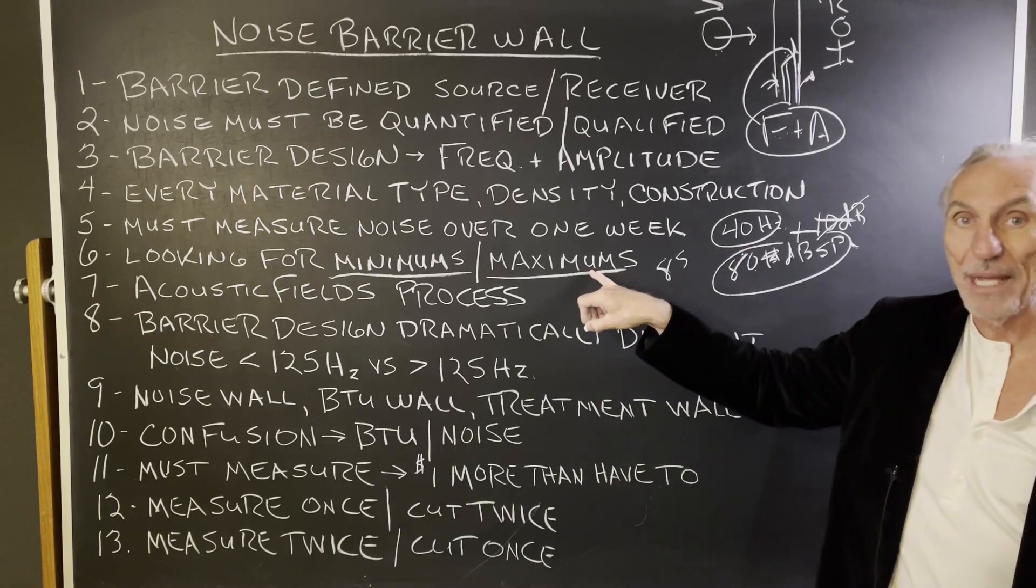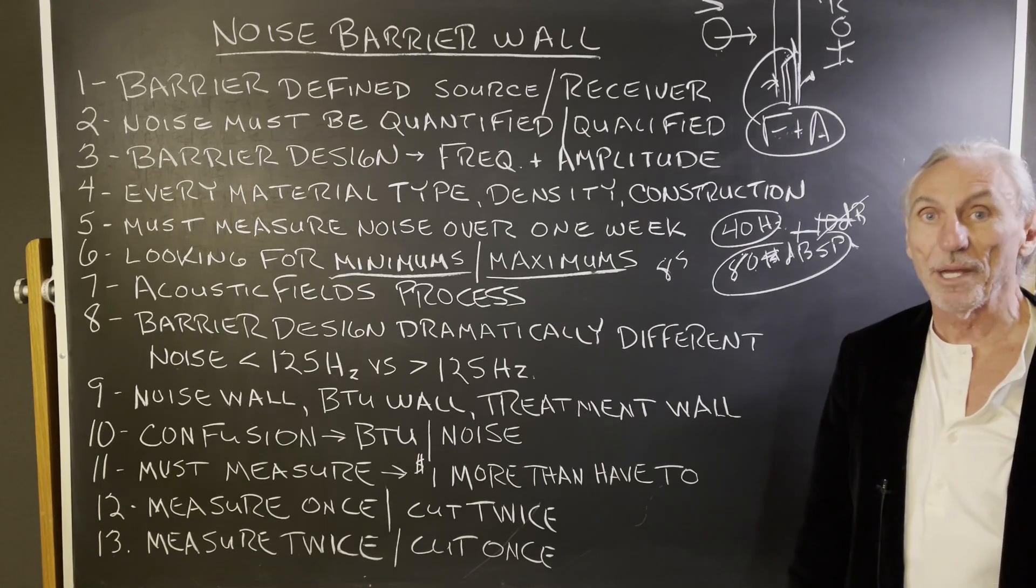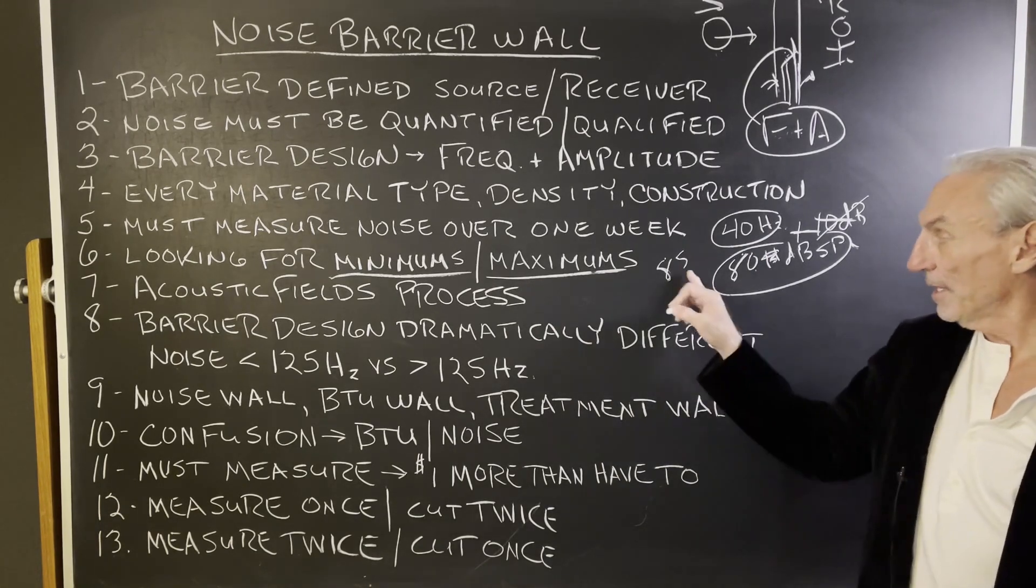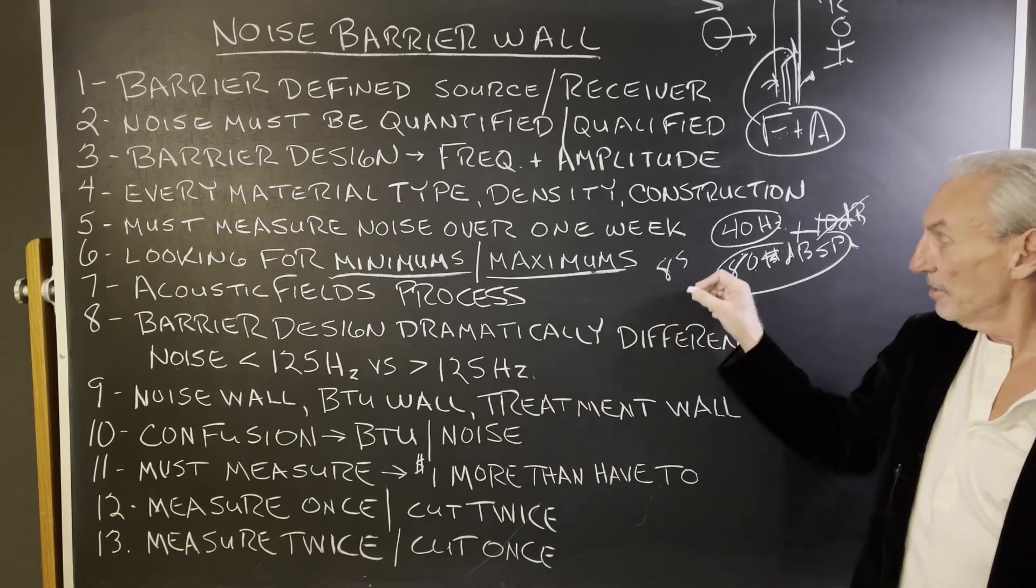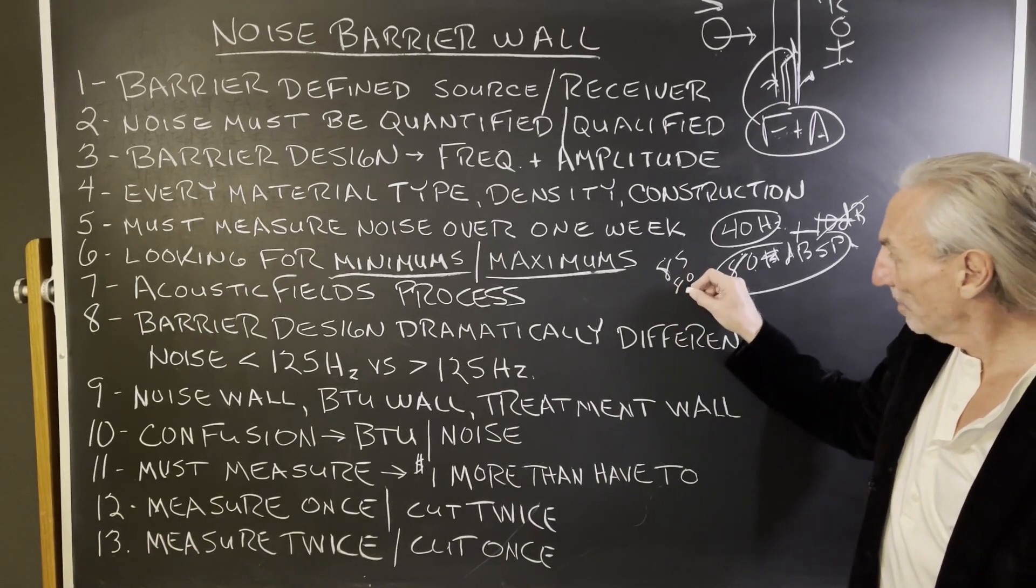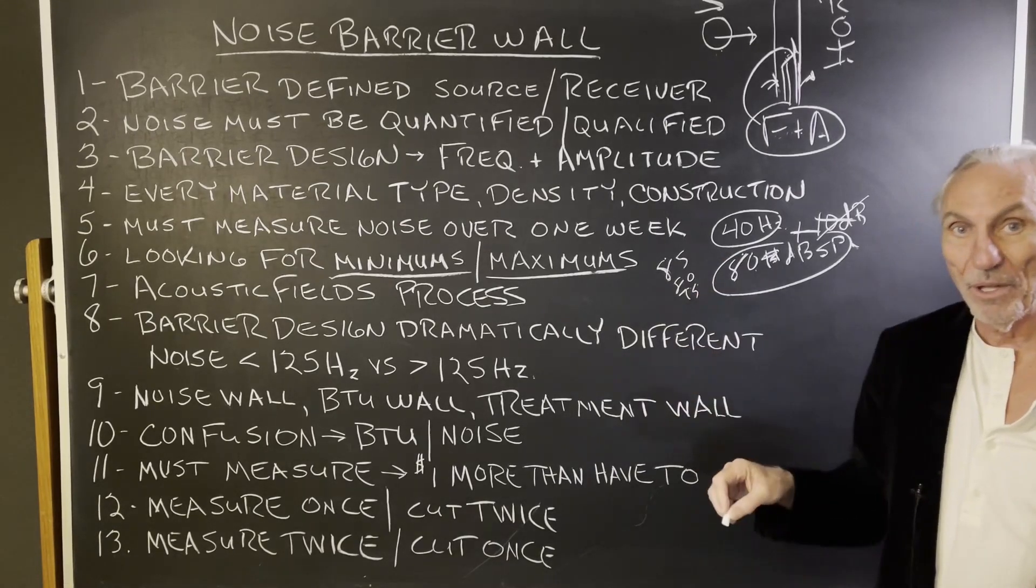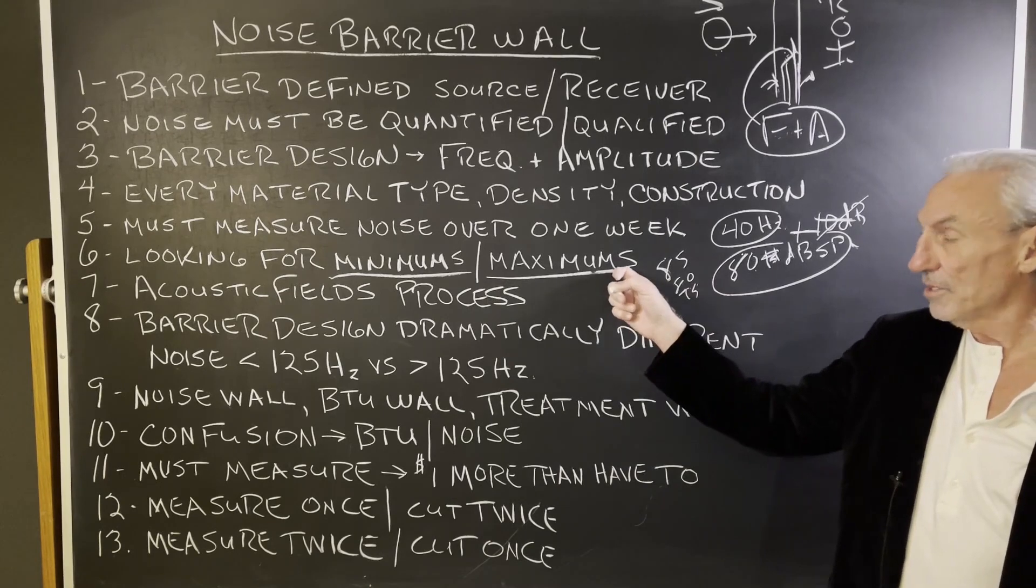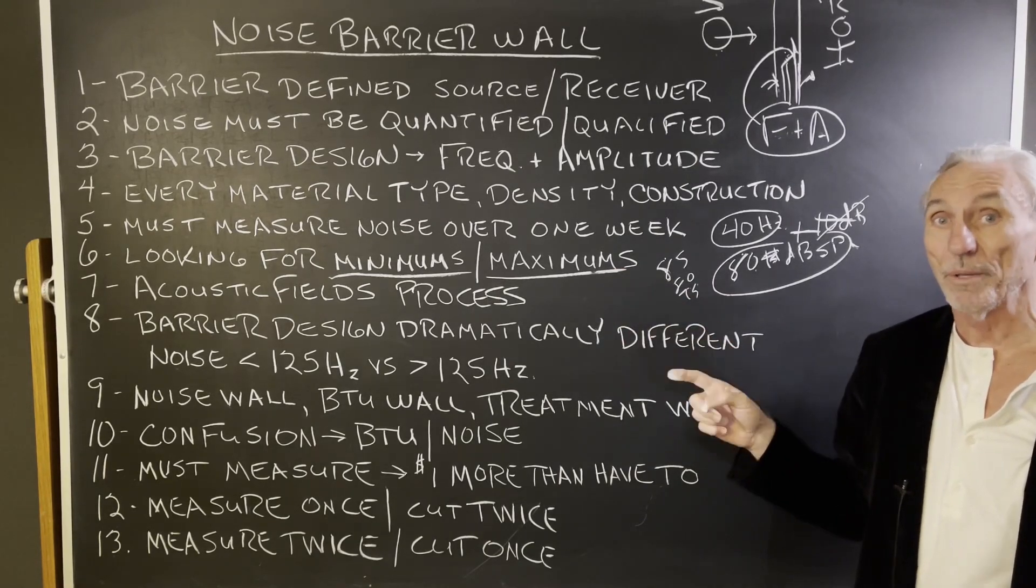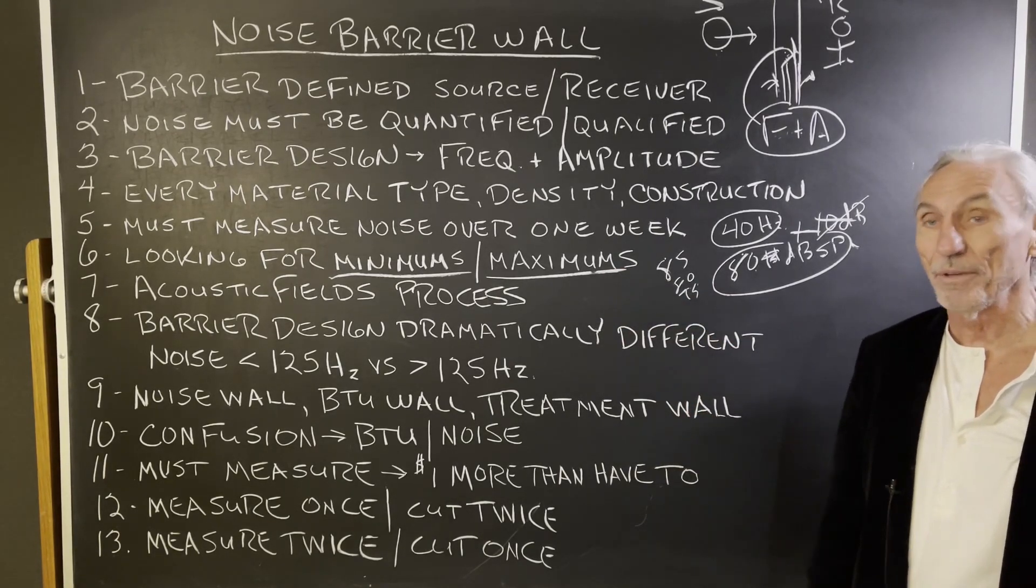Because if we design and build for the maximums, the minimums fall into place. If we build a barrier that can handle 85 dB SPL at 40 cycles, it can also handle 80, 75, anything below. It's the above that's the problem. So that's why we have to measure because we want to know the above. We want to know the maximum so we can have everything correct.